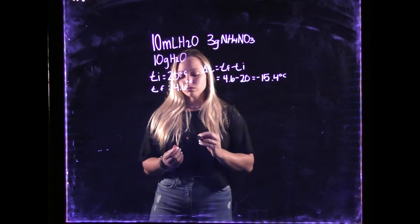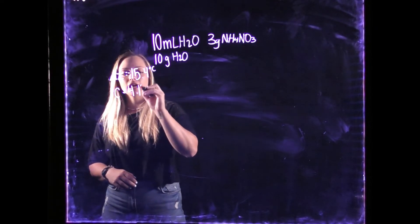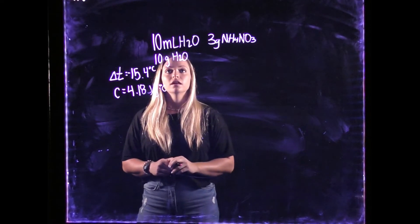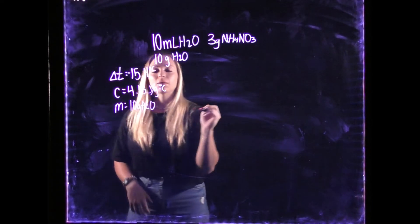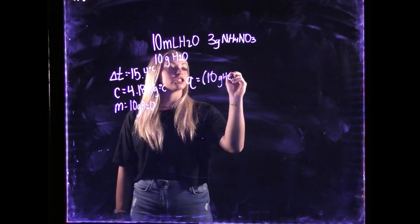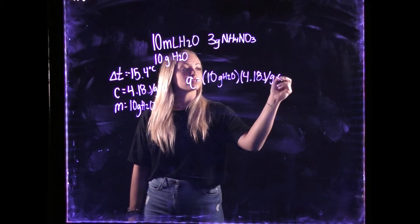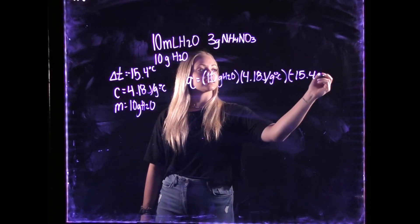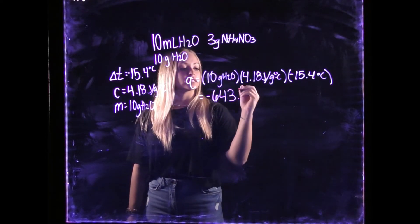Now that we have our change in T, we will use the equation Q equals mc delta T. Just like before, C equals 4.18 joules per gram degrees Celsius, and our mass is 10 grams of H₂O. Plugging that in: Q equals 10 grams H₂O times 4.18 joules per gram degrees Celsius times negative 15.4 degrees Celsius.